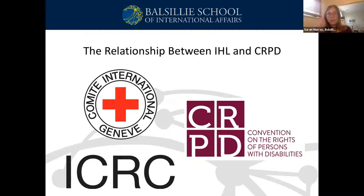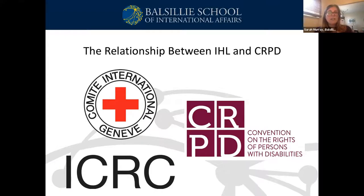The CRPD's principle of non-discrimination is echoed in IHL in the prohibition of adverse distinction. IHL prohibits unfavorable discrimination based on race, gender, nationality, religious belief, political opinion, or any other similar criteria, while a distinction may be made to give priority to those in most urgent need of care. It has been decided that disability falls under the 'any other similar criteria' section. For example, IHL provides that people with disabilities must receive prioritized attention if their health condition or the risk of losing access to health services is more urgent than that of other people or groups.